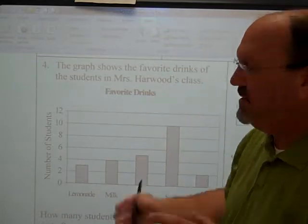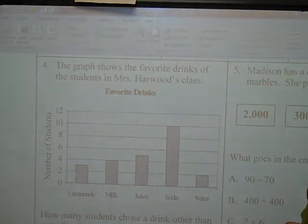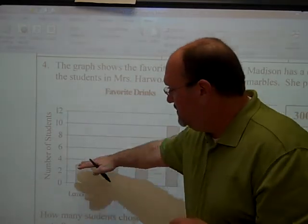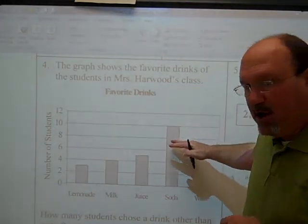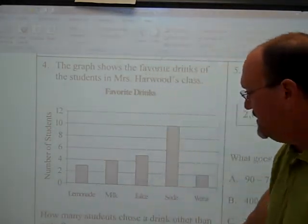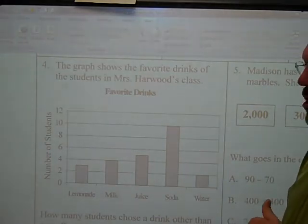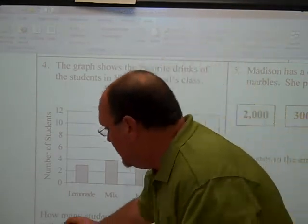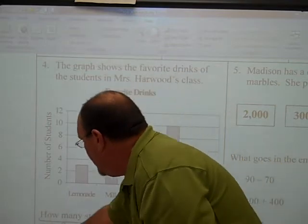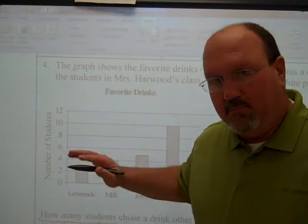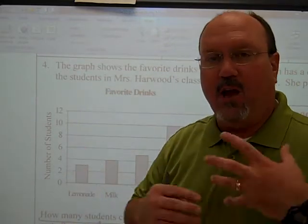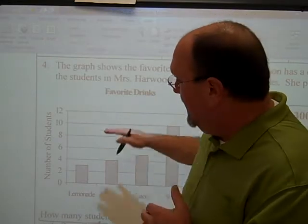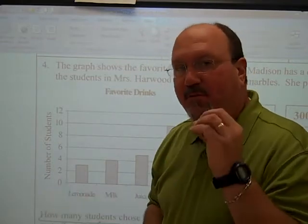Let me show you why. The problem says the graph shows the favorite drinks of the students in Mrs. Hardwood's class. There's a chart here with the bar graph, and the question down here says, how many students chose a drink other than water? One of the things we ask the kids to do — part of our IPAC strategy or our problem-solving strategy, go look at that homework helper — is to actually underline the question. And if they'll underline the question, picking out any important words, it really helps to make sure that they have read that. A lot of kids will look at the table and just start picking numbers and get kind of confused. Get them to focus.